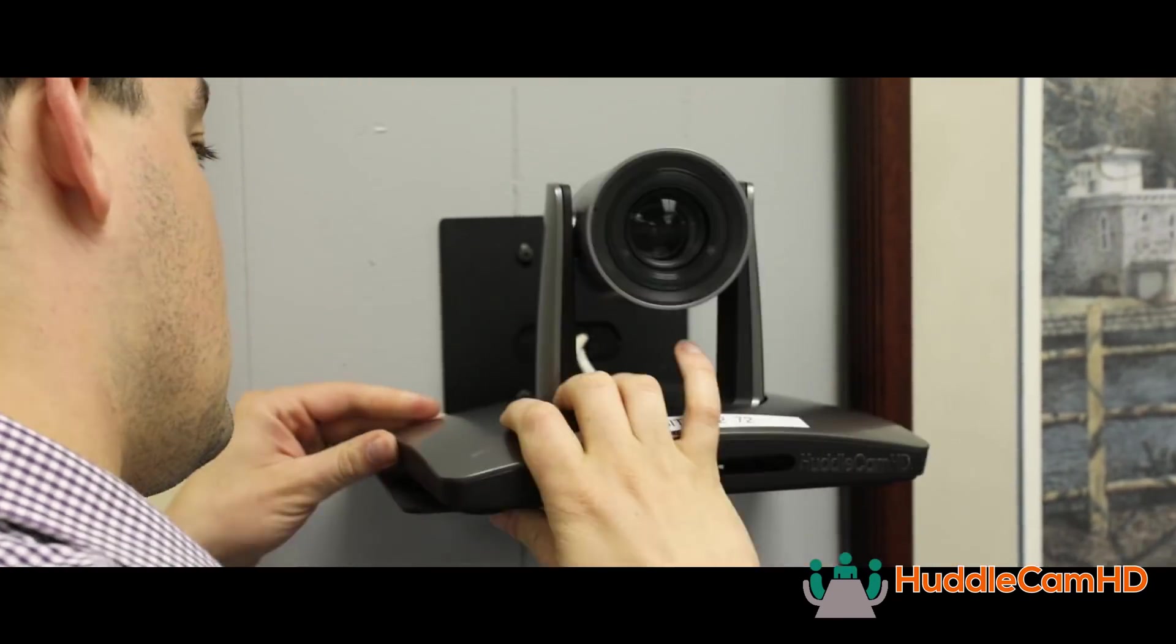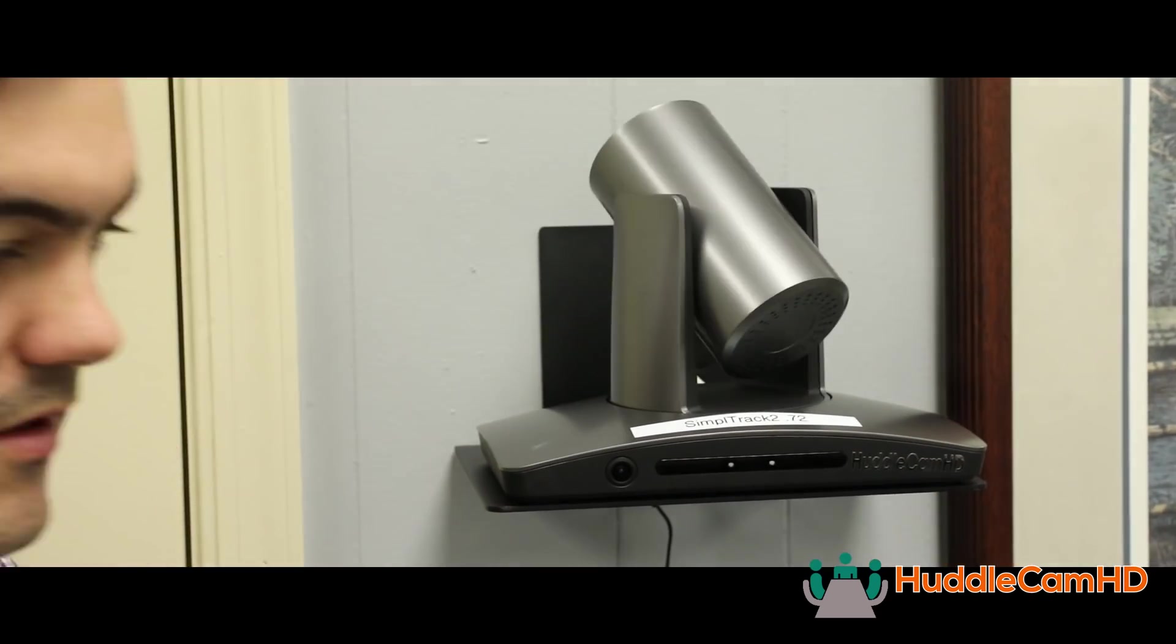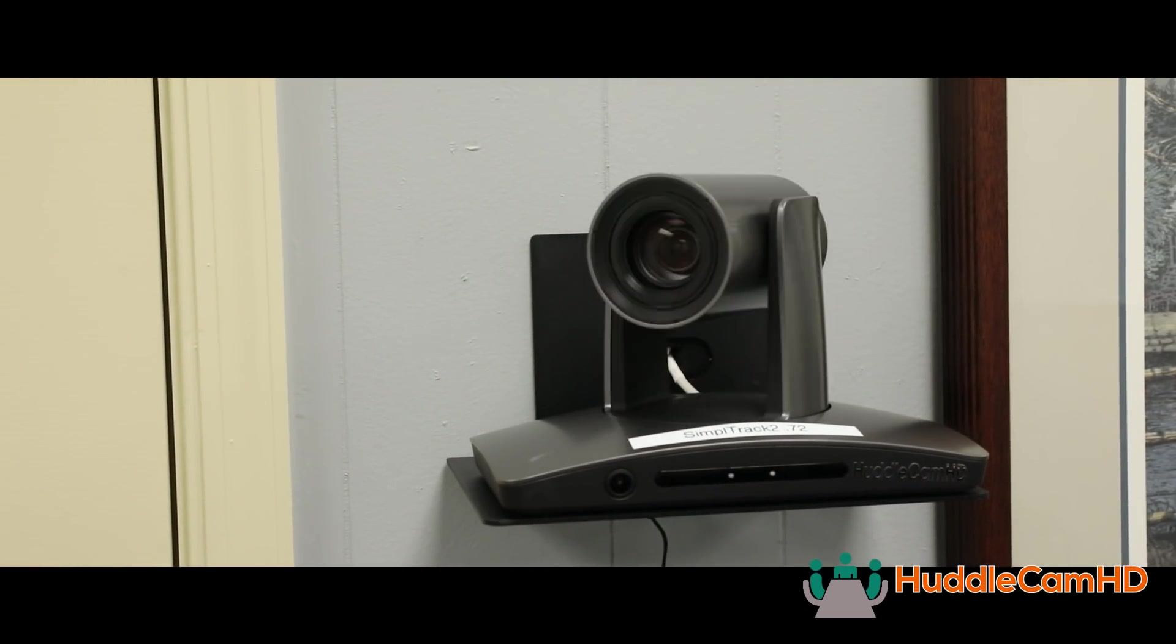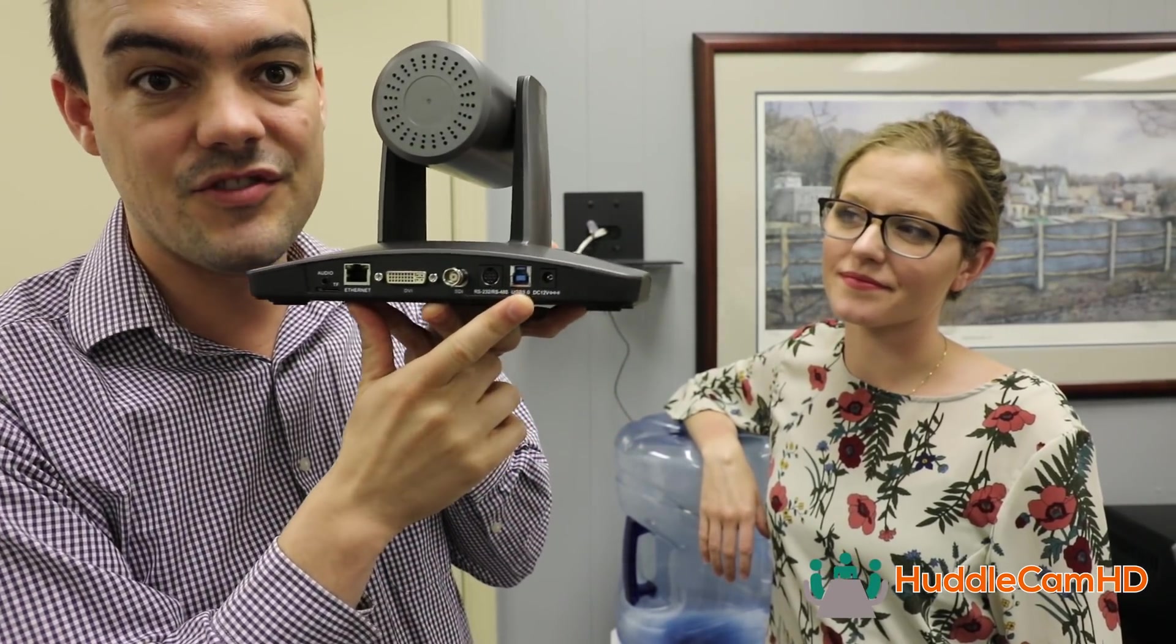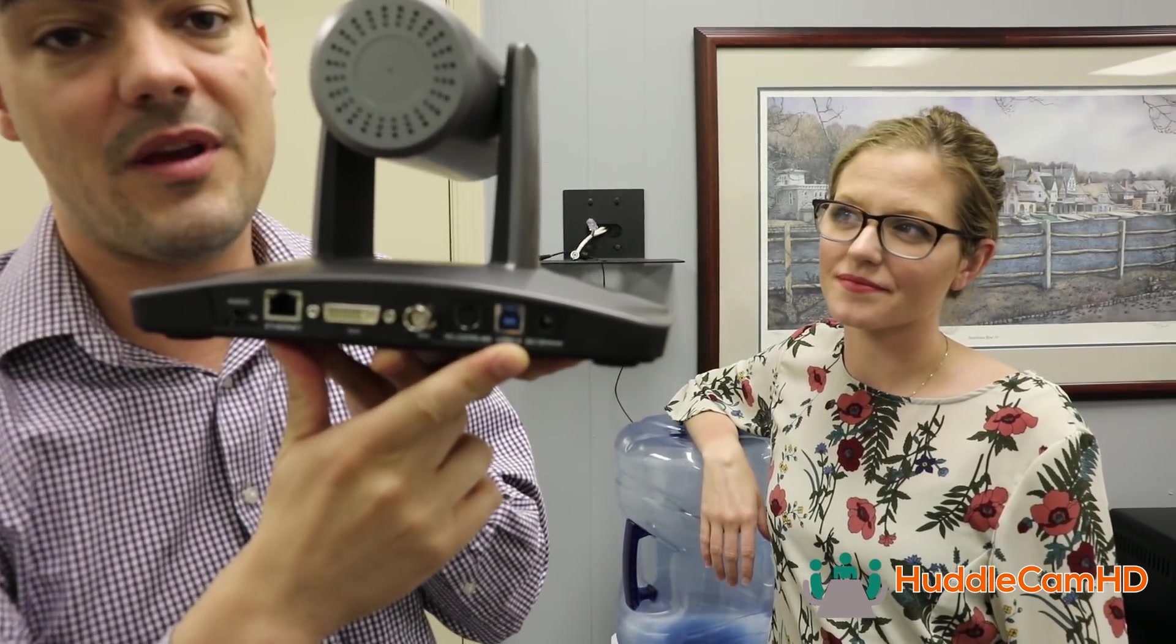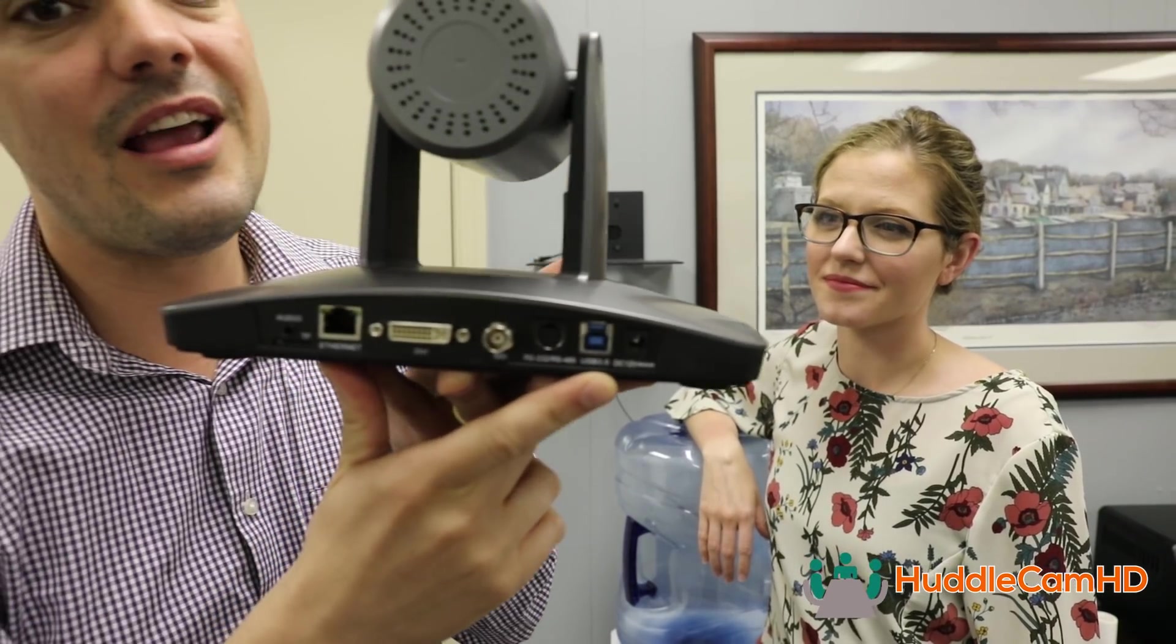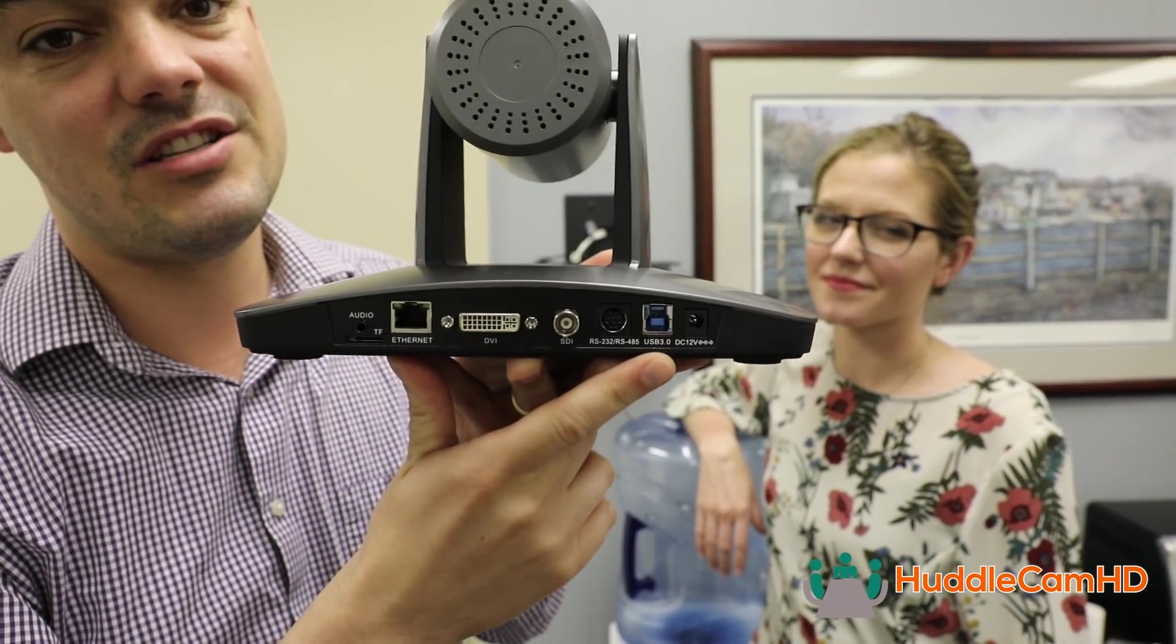All right, tool number one is the Huddlecam HD Simple Track 2. We installed it right in front of our water cooler just to keep our videos fresh. So I want to show you the back of the unit really quickly so that you can kind of figure out how you might use this product. We use it a couple different ways, but the easiest way is to simply plug it in to your computer with USB 3.0. This is plug and play directly into your computer.